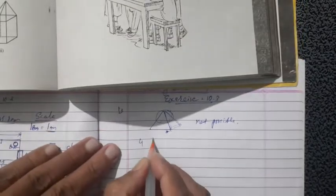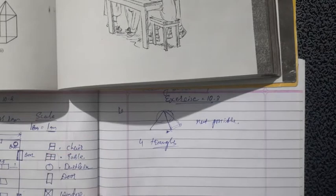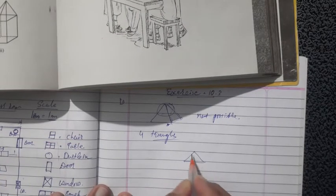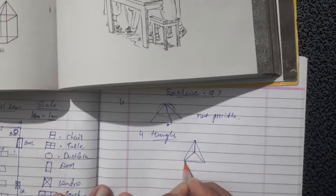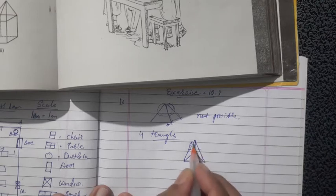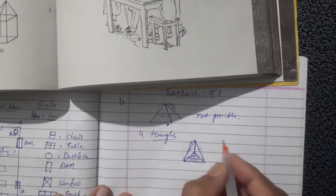Second case: four triangles. Yes, it's possible. One triangle here, second one here, third one here, and the fourth one is the base — left side, right side, back side, and one base. So four triangles is possible.